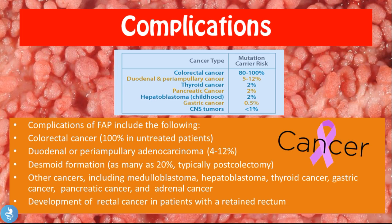Other complications include medulloblastoma, hepatoblastoma, thyroid cancer, gastric cancer, pancreatic cancer, adrenal cancer, and the development of rectal cancer in patients with a retained rectum. These additional cancers arise because the underlying defect is in the APC tumor suppressor gene, which means it fails to suppress cancer cell development throughout the entire body, not just in the colon.